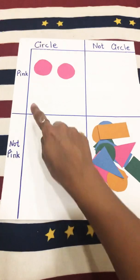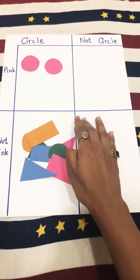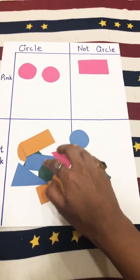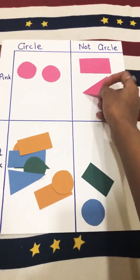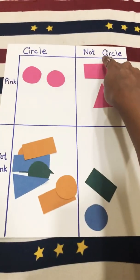Let us see what the next one says: pink and not circle. So all the shapes that are pink in color but are not circles. I have a rectangle and a triangle. So they are pink in color but they are not circles.